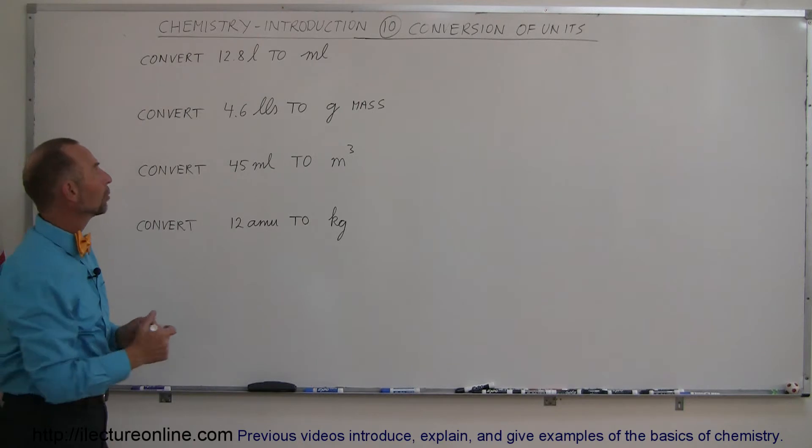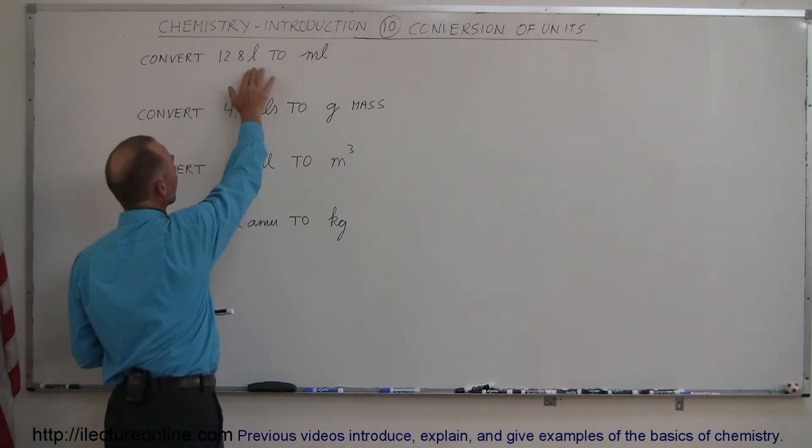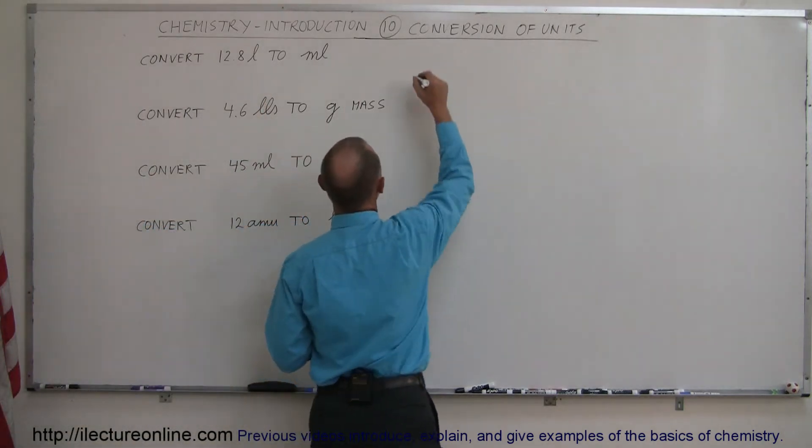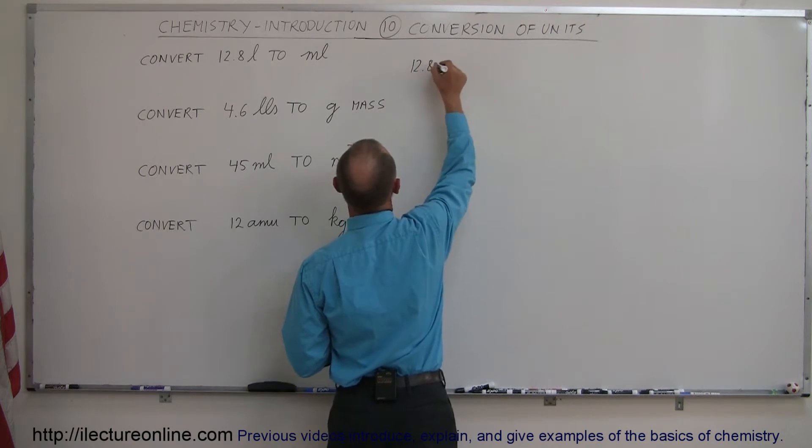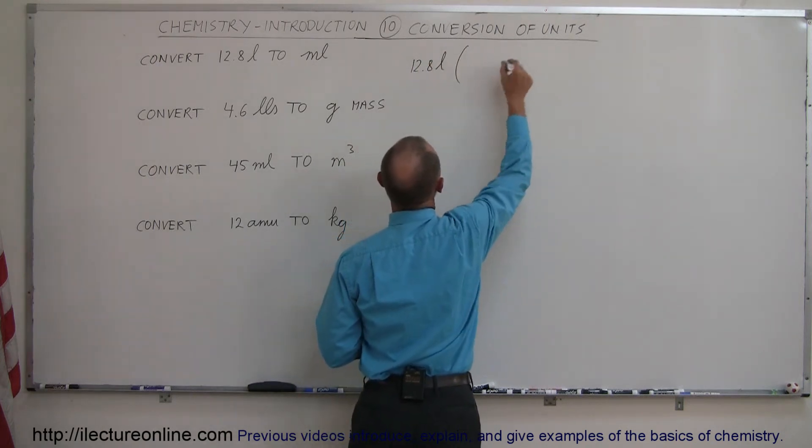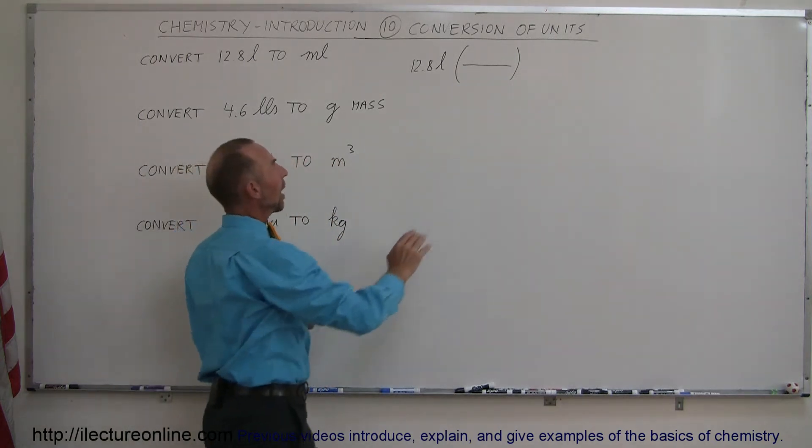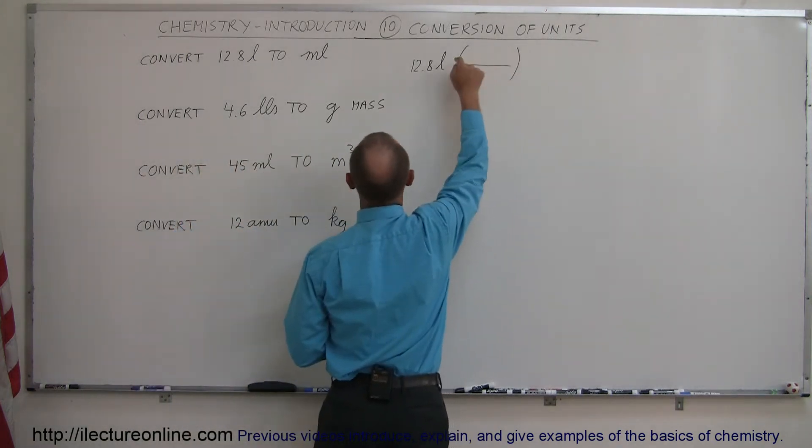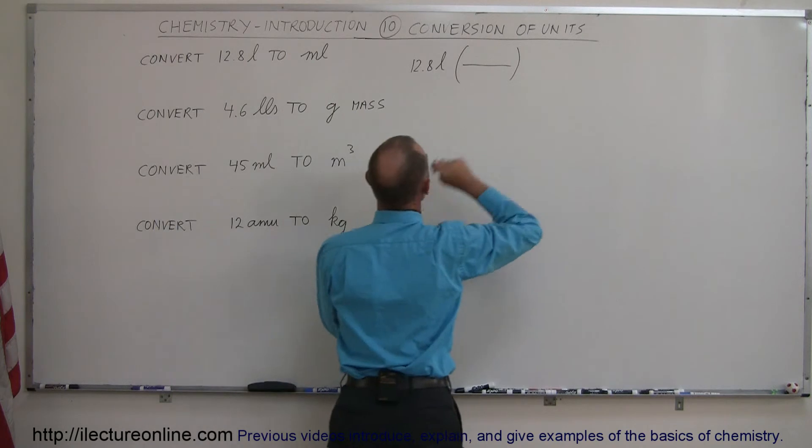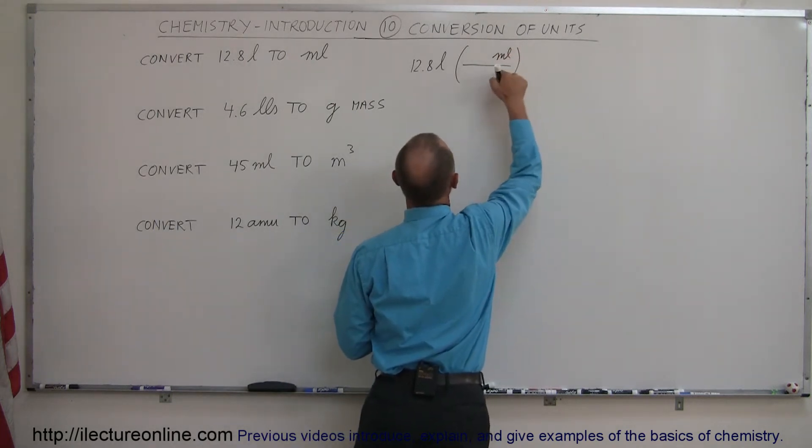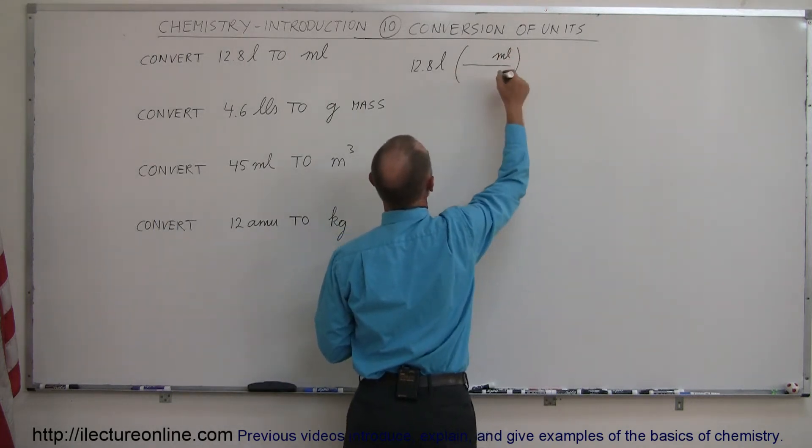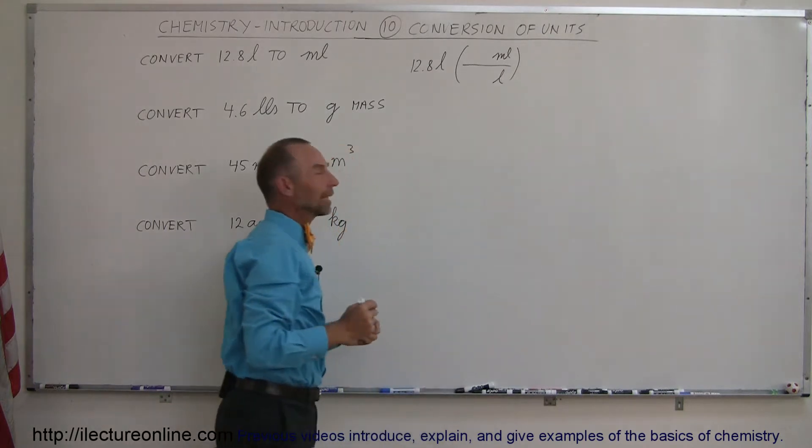The best way to do that is to write down the number you started with, so we have 12.8 liters, and then multiply that times a ratio. What goes on the top is the unit that we want to get to—we want milliliters, so we place that on top. On the bottom, you place the unit you're trying to get rid of, and in that case, that's liters.